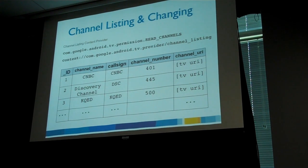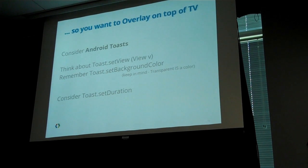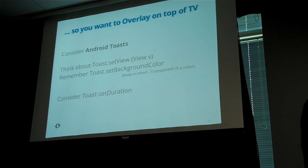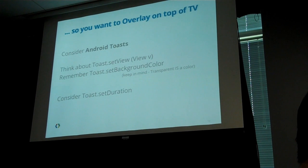The other use case — overlaying on top of live television. Again, there is no official API for that. But it wouldn't be a hackathon if we weren't creative Android hackers. A convenient method is Android Toasts. If you have a background service that sends out a Toast, keep in mind your Toast can have a generic view — you can define whatever view you want. And it's not Toast.setBackgroundColor, it's actually view.setBackgroundColor — in your view, you can set a background color, and transparent is a valid color. You can also set the Toast duration. Put those three together and you might figure out how to do something interesting.